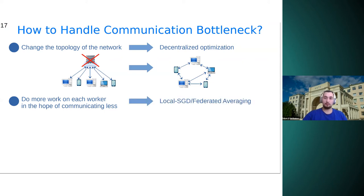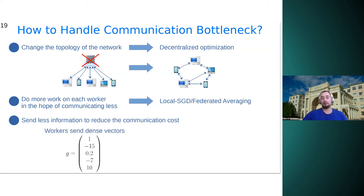And this leads us to local SGD or federated averaging type of methods. But in this talk, we will focus on another approach. And this approach is based on sending less information at each communication round in order to reduce the overall communication cost. And for example, instead of sending dense vectors, workers can send some compressed or sparse vectors that approximate the initial vectors. And as I said, we study this approach.